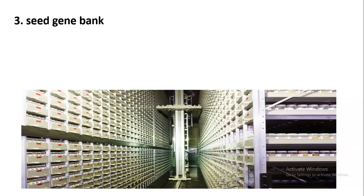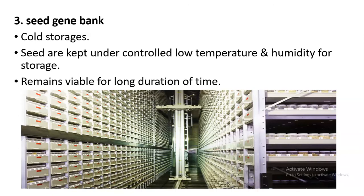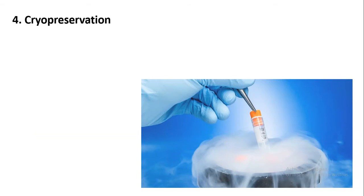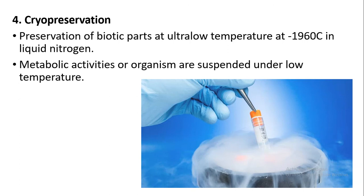Another form of ex-situ conservation is the seed gene bank. Here, seeds of plants are kept in minus degree Celsius temperature — a cold storage — under controlled low temperature and humidity, so the seeds remain viable for a long duration of time. Next is cryopreservation, where biological parts are preserved in liquid nitrogen at minus 196 degrees Celsius. All metabolic activities of the biological part are stopped at this temperature, and the material can later be used for research purposes.